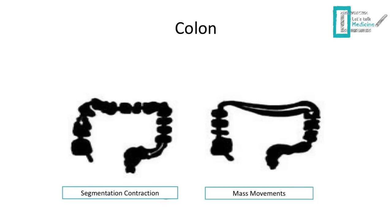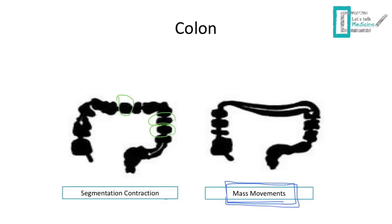In the colon, we have the same types of movement as in the small intestine. Segmentation contraction is responsible for mixing, and in the colon this creates bubble-like formations called haustra, which are found only in the colon. The peristaltic movement in the colon is called mass movement — an important term to remember when referring to the large intestine.